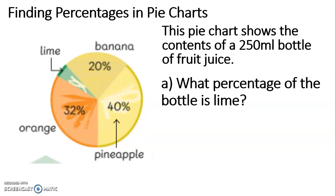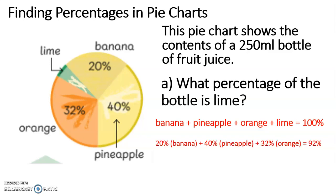Solve A — what percentage of the bottle is lime? If we remember that a whole pie chart is 100%, that means banana plus pineapple plus orange plus lime must equal 100. So 20 plus 40 plus 32 plus something is 100. Let's add the known quantities together: 20 plus 40 plus 32 equals 92. Find that unknown quantity — 100% subtract the 92 we know leaves us with 8%. That means the lime must be 8% of the content of the bottle.